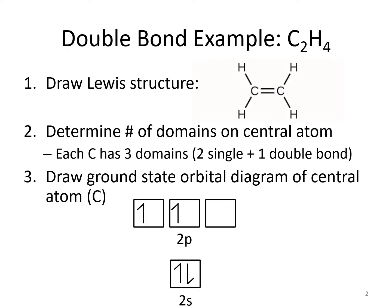Let's look at hybridization in a molecule with a double bond. First, we draw the Lewis structure, then we count the domains on the central atom. In this case, we have two carbons which are basically identical, so whatever we figure out for one carbon will also apply to the other. Each carbon has two single bonds and one double bond, so it has three domains. We draw the ground-state orbital diagram of the central carbon atom, following the Aufbau principle and Hund's rule.